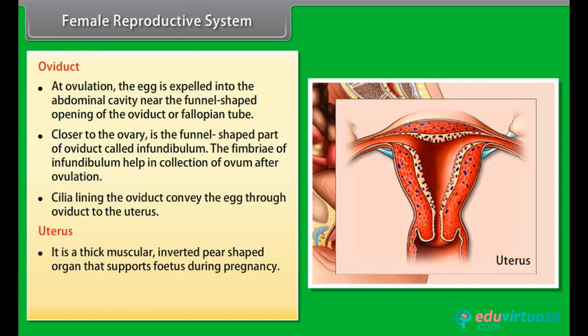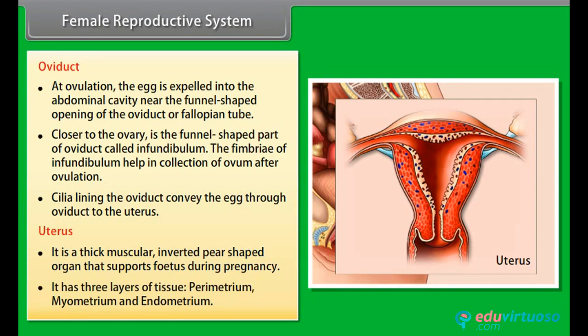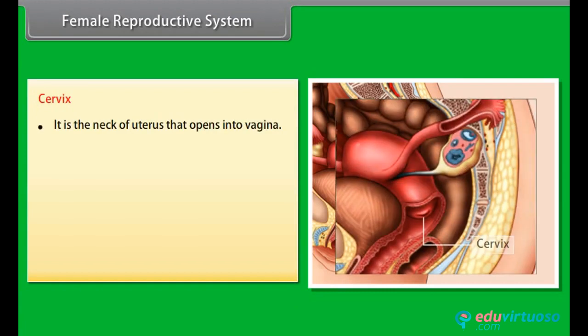The uterus is a thick muscular, inverted pear-shaped organ that supports the fetus during pregnancy. It has three layers of tissue: perimetrium, myometrium, and endometrium. The cervix is the neck of the uterus that opens into the vagina. The cavity of the cervix is called the cervical canal.